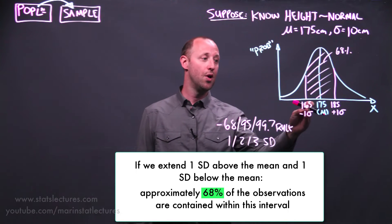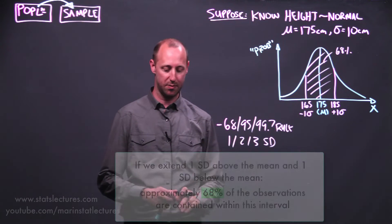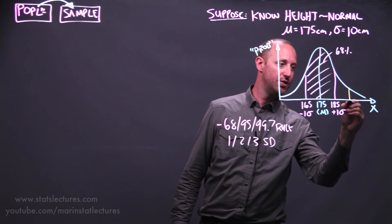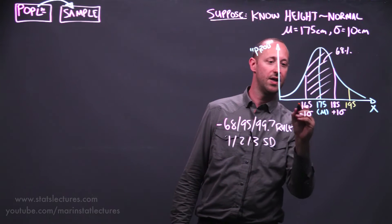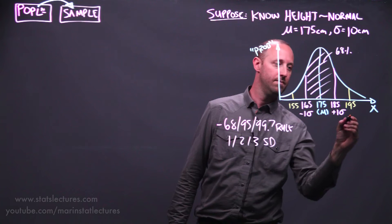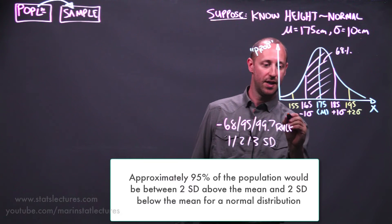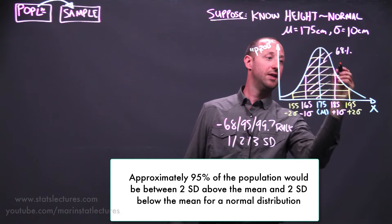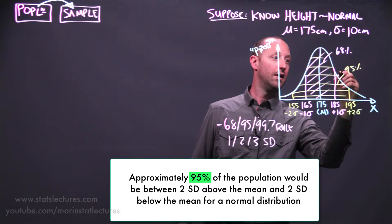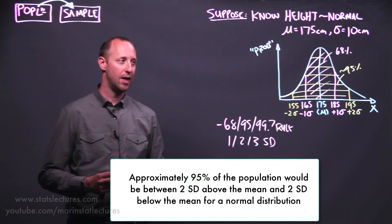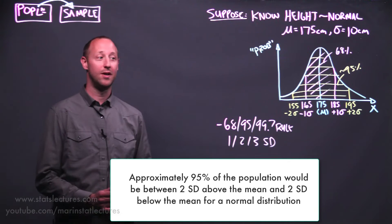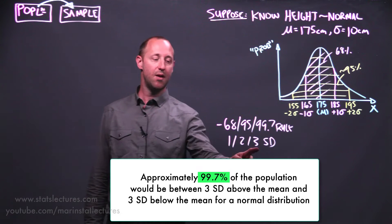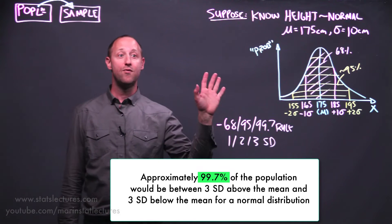If we reach out two standard deviations, going up to 195 and down to 155, here again, reaching out two standard deviations above and two below the mean, approximately 95% of the population will be in this interval. And I won't draw it in because we don't want the picture to get too messy, but approximately 99.7%, or most of the individuals, stay within three standard deviations of the mean, again, for a normal distribution.